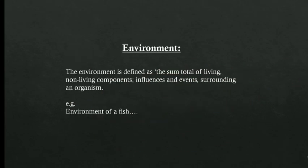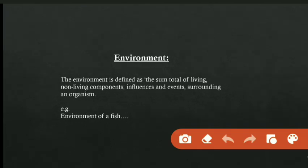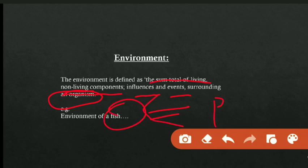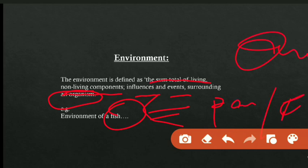Next is environment. The environment is defined as the sum total of living and non-living components, influences, and events surrounding an organism — whatever surrounds an organism and influences it is its environment. For example, the environment of a fish can be a pond, a lake, a river, or an ocean.